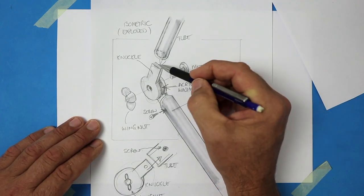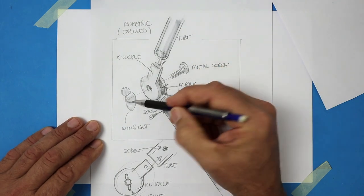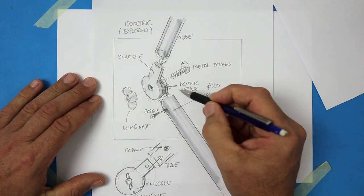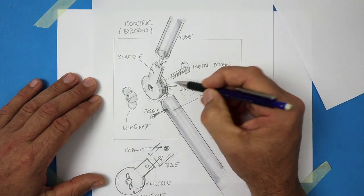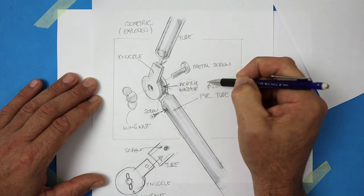So here's an exploded isometric of all the parts. So designers, even if roughly, learn how to draw in 3D because it also helps me think about the designs. This washer in the middle wouldn't have occurred to me until I saw it in a 3D view.